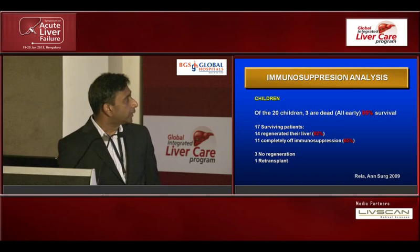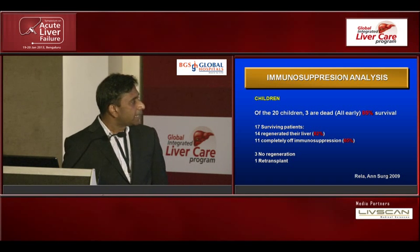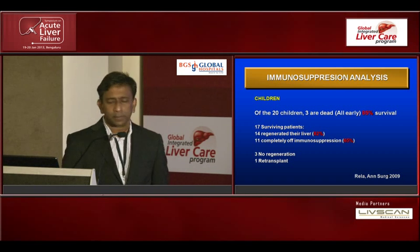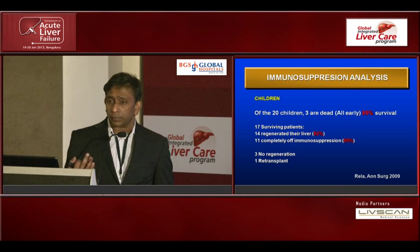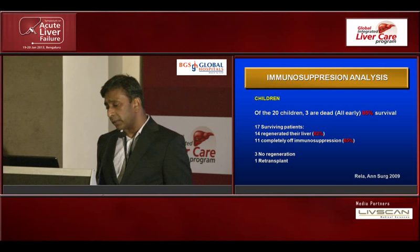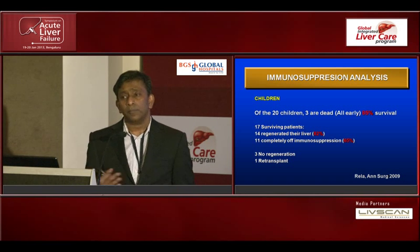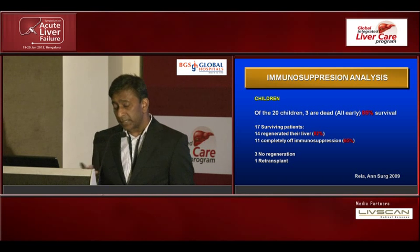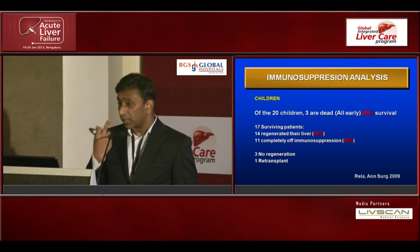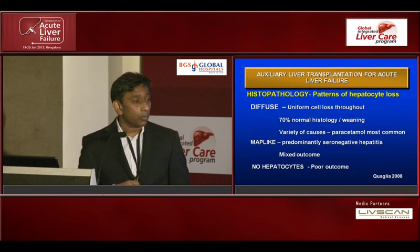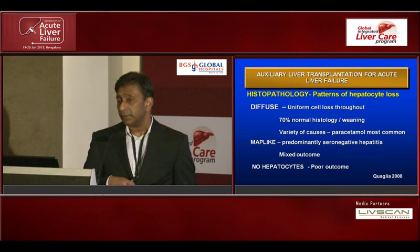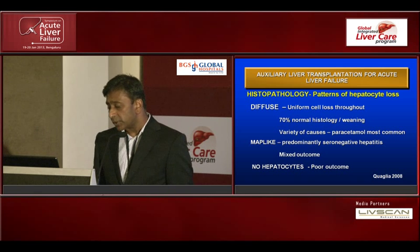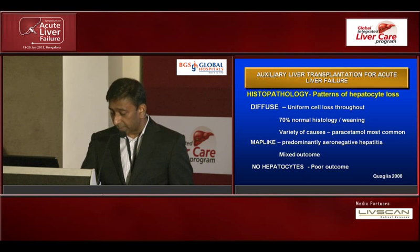Looking at adults and children individually: in adults there were eight early deaths and only two late deaths with right lobe grafts, versus higher mortality with left lobe grafts, though still with complete withdrawal of immunosuppression in two-thirds of patients. In children the results — published in the Annals of Surgery in 2009 — showed 85% survival with regeneration seen in 82% of patients. At the time of the study, 65% were completely off immunosuppression. Children coming off immunosuppression is very important because long-term immunosuppression carries risk of PTLD, renal complications, and non-compliance in teenage years.